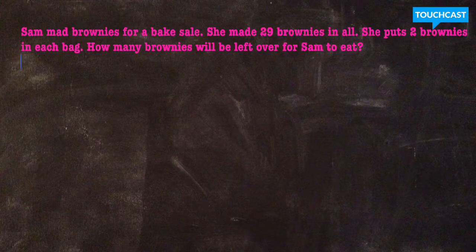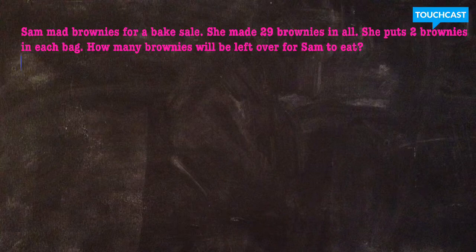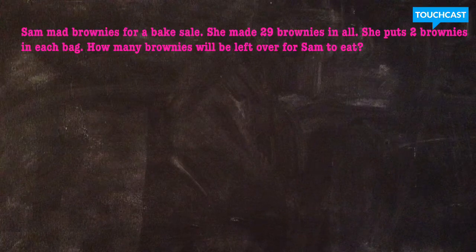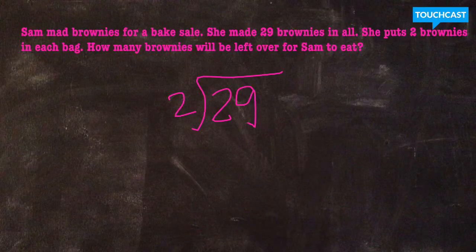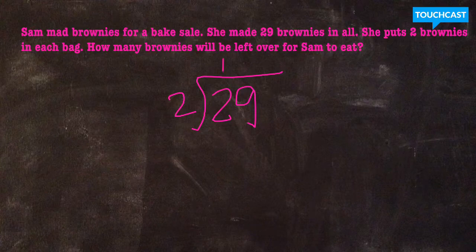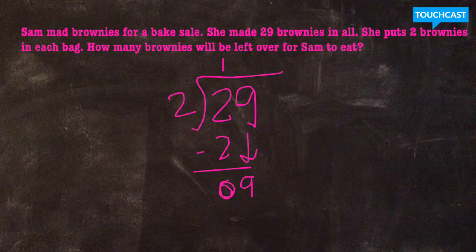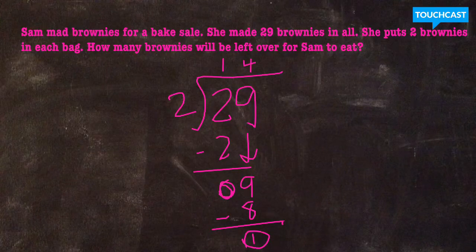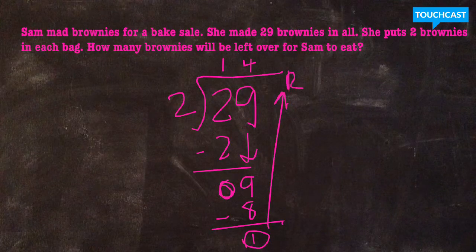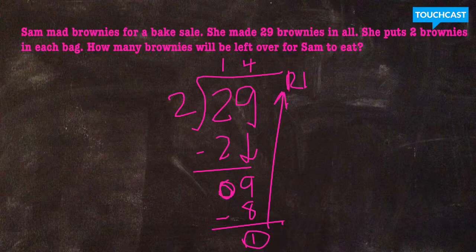So Sam made brownies for a bake sale. She made 29 brownies in all. She's going to put two brownies into each bag for the sale. How many brownies will be left over for Sam to eat? So my division equation here is 29 divided by 2. So 29 into groups of 2. So 2 goes into 2 one time. 1 times 2 is 2. Nothing left over. Bring down my 9. 2 goes into 9. I know it goes in 4 times without going over. 4 times 2 is 8. 9 minus 8 is 1. There's nothing left to bring down. That tells me this is my remainder. So the answer to my division equation, 29 divided by 2, is 14 remainder 1.